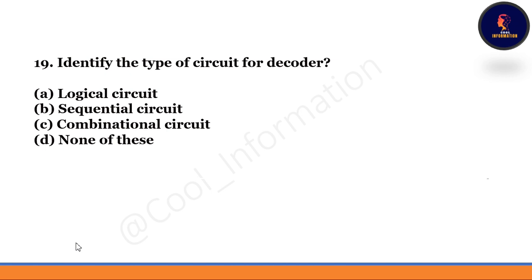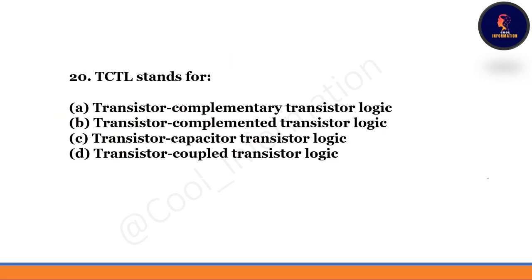Next question: Identify the type of circuit for a decoder — option A: logical circuit, option B: sequential circuit, option C: combinational circuit, option D: none of these. The correct option is option C — combinational circuit. Next question: TCTL stands for — transistor-transistor logic, transistor complemented transistor logic, transistor capacitor transistor logic, or transistor coupled transistor logic. Option D is correct — transistor coupled transistor logic is the full form of TCTL.